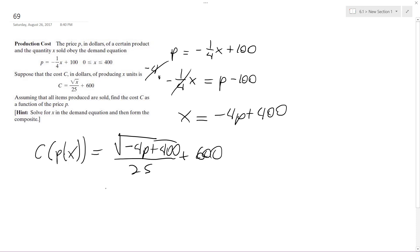You can simplify this down to 4 times (100 - p), and pull out the fours. This becomes 2*sqrt(100-p) over 25 plus 600, where 0 ≤ p ≤ 100.